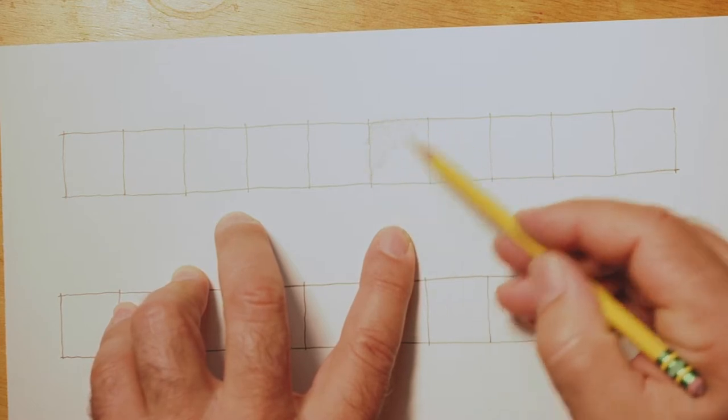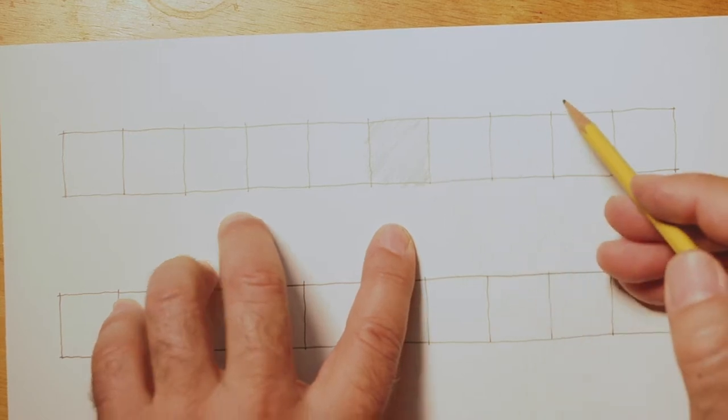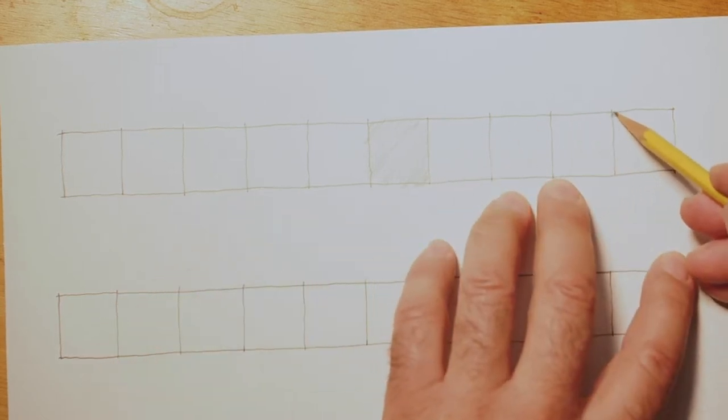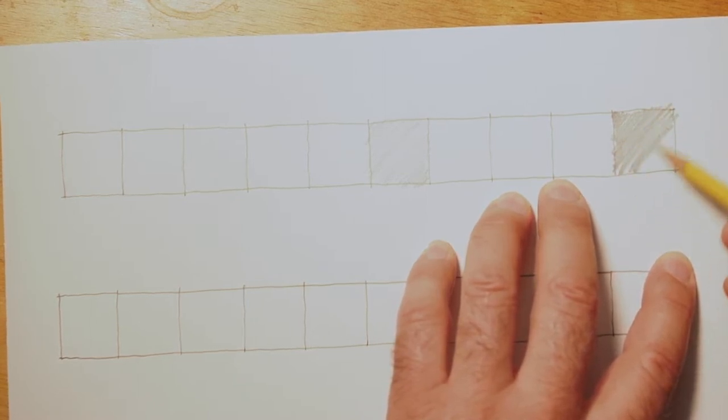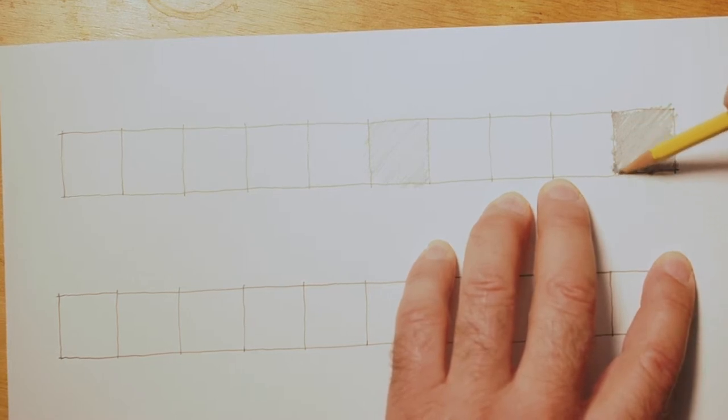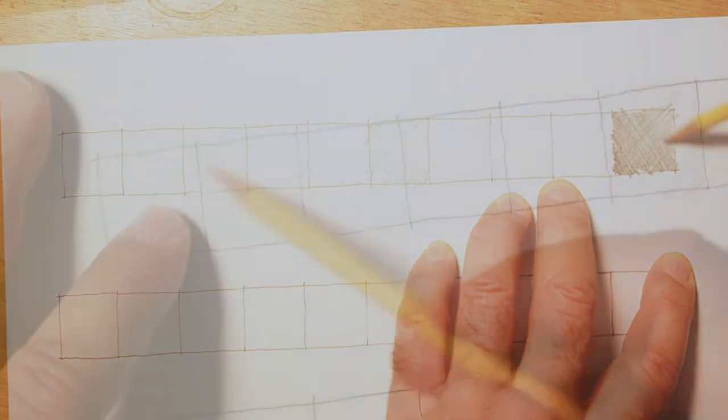Here, I'm just going to use a number two pencil and make a gray and then make the other end as dark as I can practically make it with this drawing tool. To start out, I'm not so much worried about what texture I'm leaving behind. I'm just trying to make a range of value with this tool.